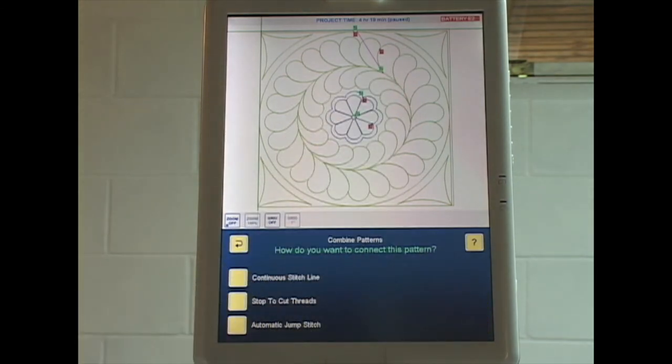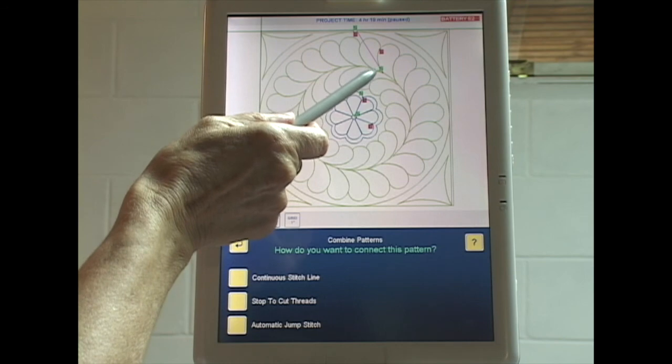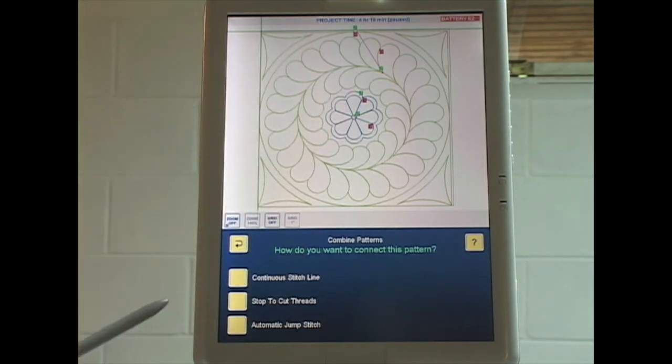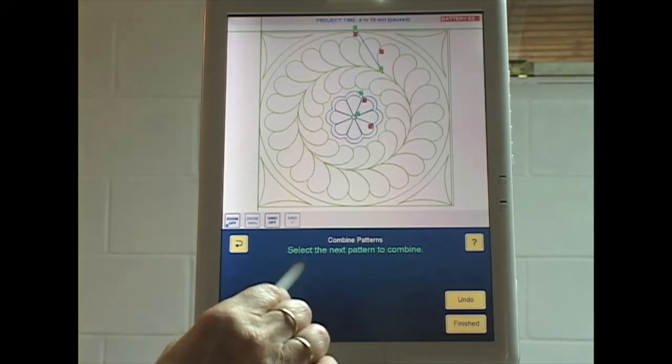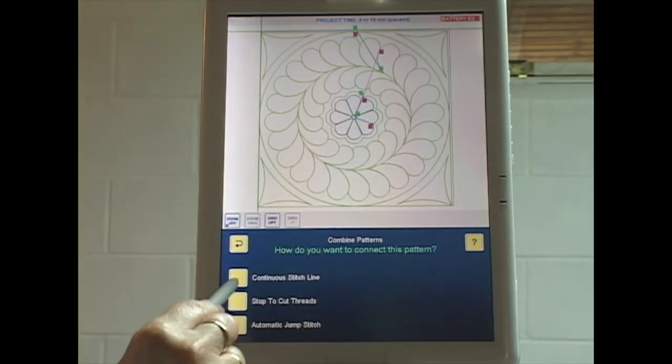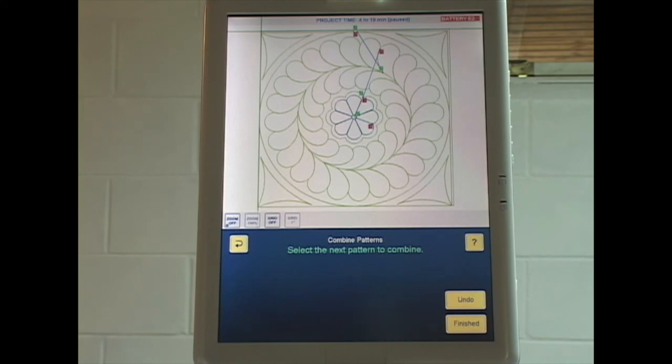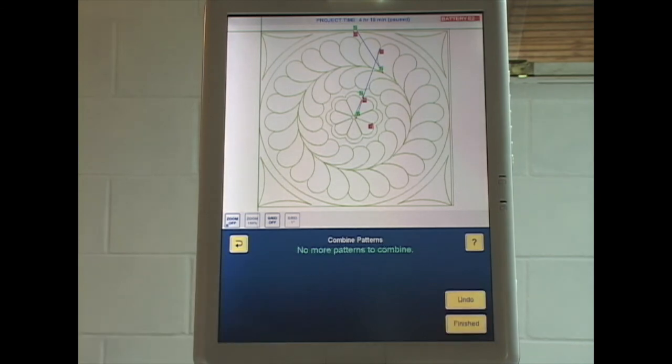But now I get these choices because it needs to know what it's going to do between the end of that first pattern and the start of the second one. I have three choices. The same three choices we have everywhere else. Continuous stitch lines, stop to cut threads or automatic jump stitch. I want stop to cut threads. And I know I've chosen stop to cut threads because now I have a blue line on my pattern. All right. Message says select the next pattern to combine. There's one more. This one. Continue. Stop to cut threads. So now I have changed the transitions to cutting threads.